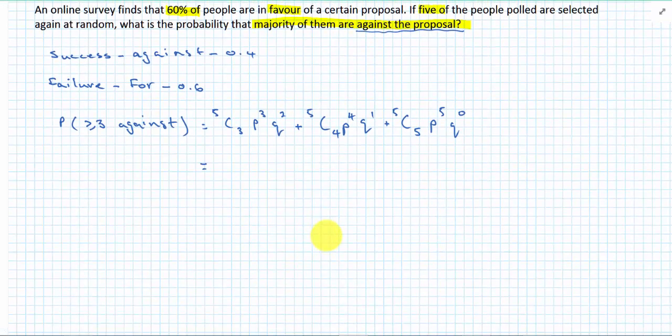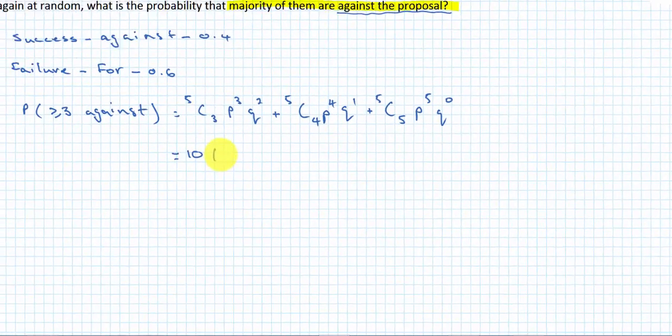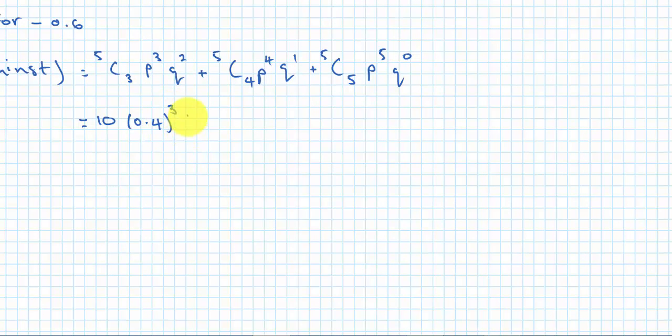It ends up being probably less work to just do three, four, five. So from five people, I'm choosing three to be against. So that would be P to the three, Q to the two, plus five choose four to be against, or five to be against. And then we substitute our numbers. Five choose three is ten, 0.4 to the three, 0.6 to the two, plus five, 0.4, 0.6, and so on.